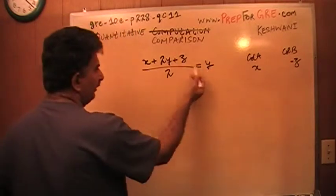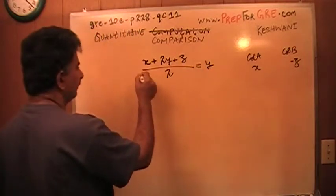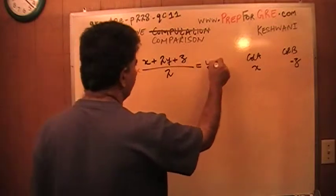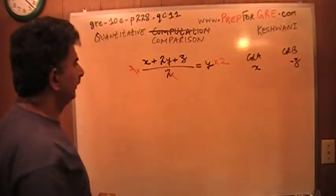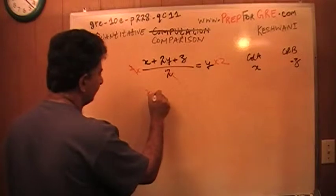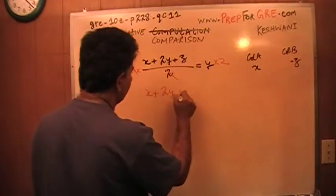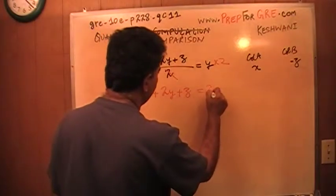If you multiply both sides of this equation by 2, you can get rid of the denominator. And what you end up with is x plus 2y plus z equals 2y.